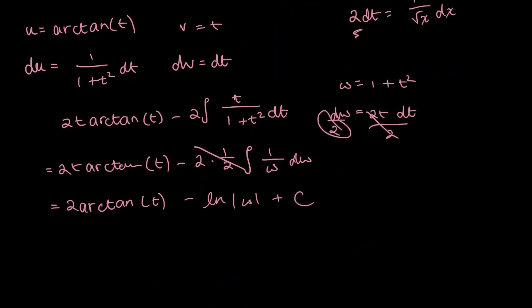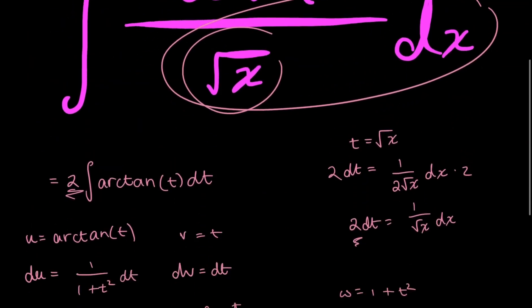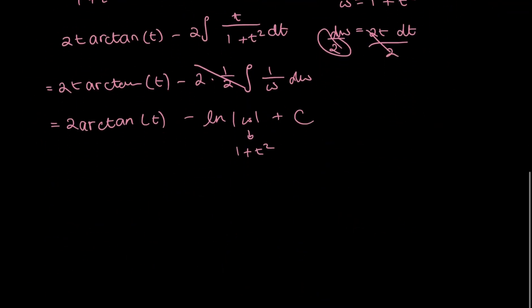So, first we said, let's start with that w, because that's the last thing we did. The w, we said, is 1 plus t squared. And then, before that, we said that t is equal to root x.